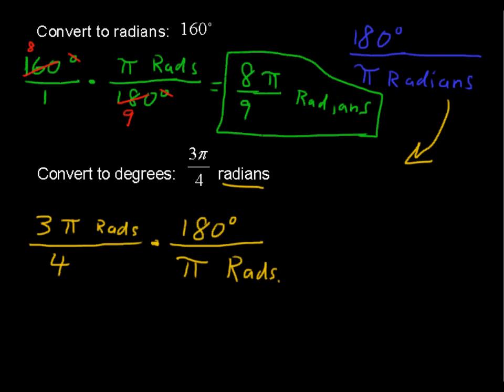The pi's cancel out, the radians cancel out, and we'll be left with just degrees. Let's cancel something out of the 4 and the 180. Let's divide a 2 out.